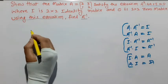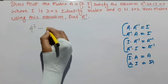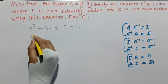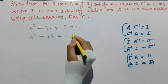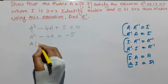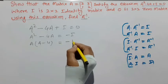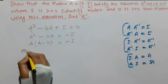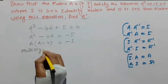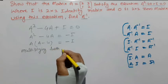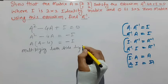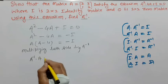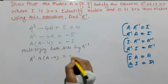हमारी equation है A² - 4A + I = 0। I को opposite side shift करो: A² - 4A = -I। अब A common लो: A(A - 4) = -I। अब both sides को A⁻¹ से multiply करते हैं।